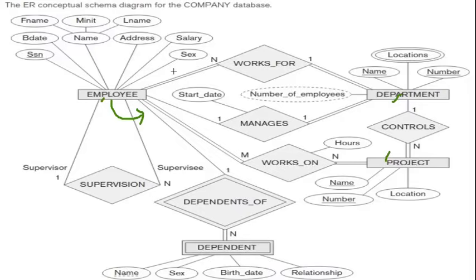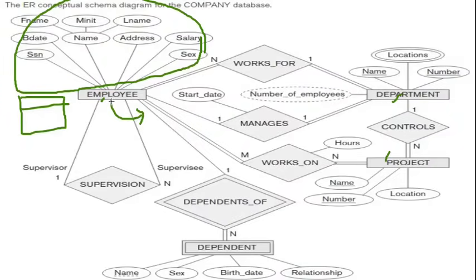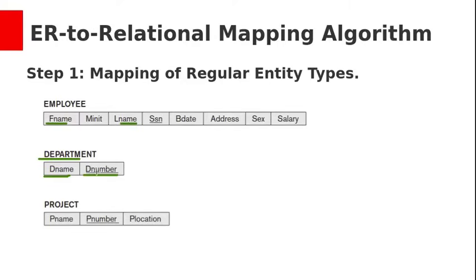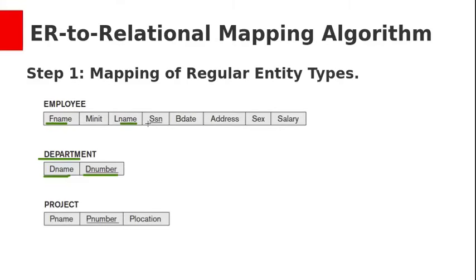To convert employee, we need to create a new table and include all its attributes. Since name is a composite attribute, we include the simple attributes: first name, middle name, and last name. Then SSN, birth date, address, gender, and salary. For department, we have two simple attributes: name and number. Location is a multi-valued attribute, which we will cover in step 6. So we create a department table with dname and dnumber. Name and number are both key attributes, so either can be selected as primary key — dnumber is selected and underlined. For employee, SSN is the key attribute, so SSN becomes the primary key.